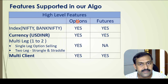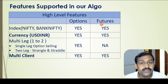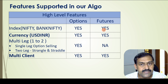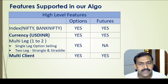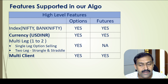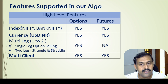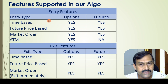Here are the high-level features we have implemented. It supports both options and futures — for options it is only option selling, and for futures it supports both buying and selling. Nifty and Bank Nifty are definitely supported, and for futures we have also included buying and selling of selective stocks. Another important feature is USDINR support for both options and futures. It supports single-leg option selling or two-leg option selling strategies such as strangles and straddles. It also supports the famous 9:20 straddle. Multi-client support is already implemented and being used.